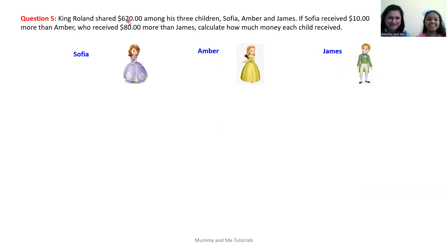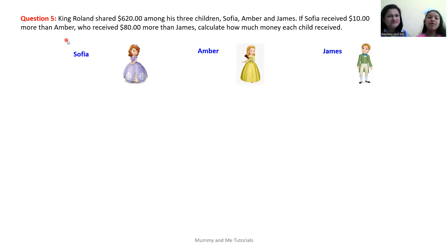King Roland shared $620 among his three children, Sophia, Amber, and James. If Sophia received $10 more than Amber, who received $80 more than James.